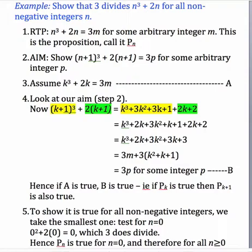Required to prove that n³ + 2n equals 3m for some arbitrary integer m. That's just showing that it's a multiple of three, in other words, three divides n³ + 2n. That's the mathematical way to write that. So this is the proposition, and just to save writing proposition all the time when we need it, we'll just call that Pₙ, the proposition for n.